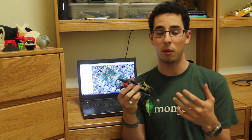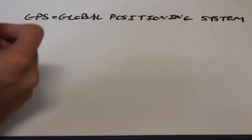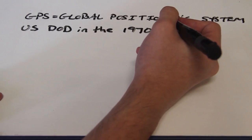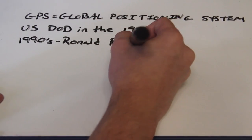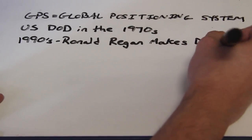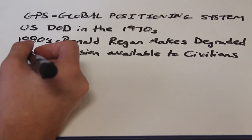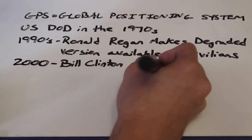Understanding GPS history will help explain how we're going to use the system to get latitude and longitude data onto our Arduino. GPS stands for the Global Positioning System. It was initialized by the U.S. Department of Defense in the 1970s originally for military purposes. President Ronald Reagan issued a directive making a degraded version of GPS available to civilians in the early 90s, though it still was not very accurate. Bill Clinton later signed a bill making the 20-meter full resolution version available to civilian users around the year 2000.